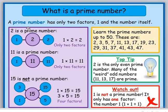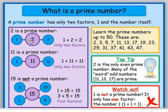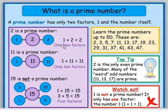Let us check what a prime number is. Mathematically, a prime number has only two factors: 1 and the number itself. Consider the number 2 — it is a prime number because 2 can only be obtained by multiplying 1 and 2. No other factors exist for 2, that is why 2 is a prime number.